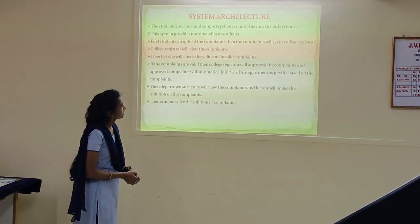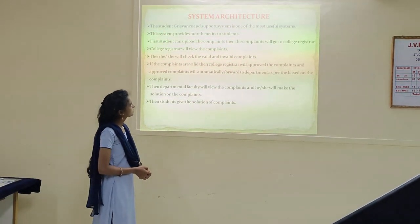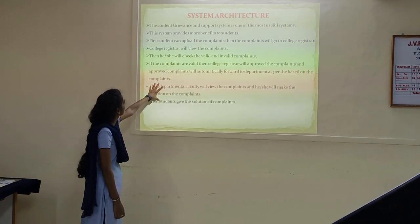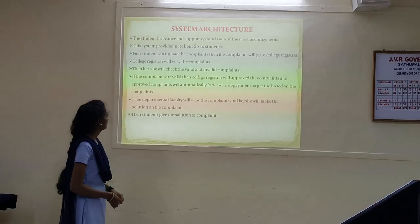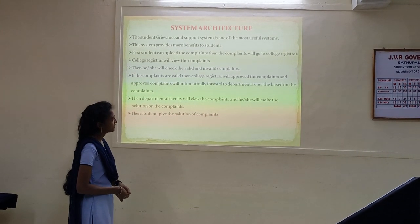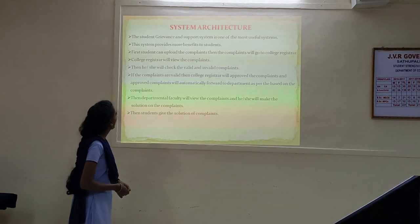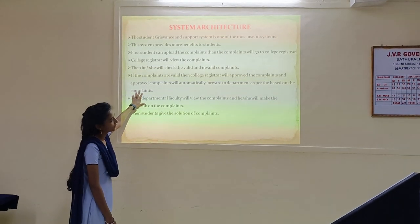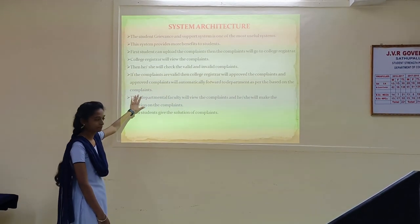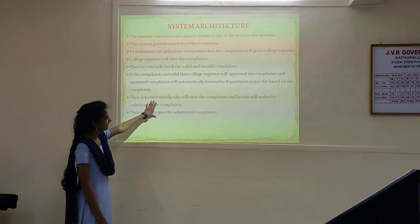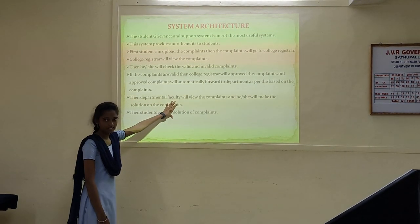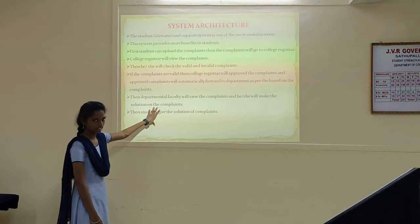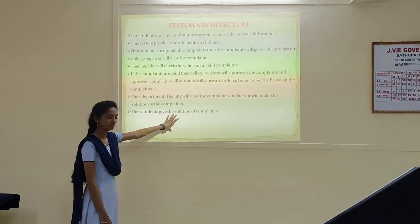System architecture: the student grievance and support system is one of the most useful systems. If the complaints are valid, the college registrar will approve the complaints, and approved complaints are automatically forwarded to the department based on the nature of the complaints. Then the departmental faculty will approve the complaints and make a solution for the complaints. Then the student receives the solution of the complaints.